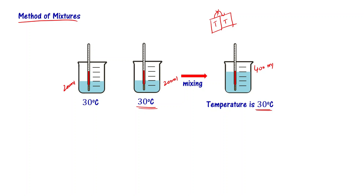These two bodies are in thermal equilibrium, meaning temperature is the same. When you pour the liquid from one beaker into another and mix them, these two liquids are in thermal equilibrium — they are at the same temperature. That's why the temperature of the mixture is going to be 30 degrees centigrade.